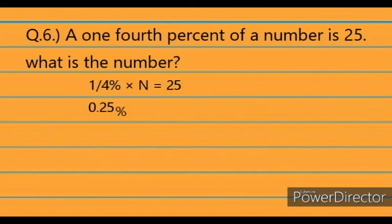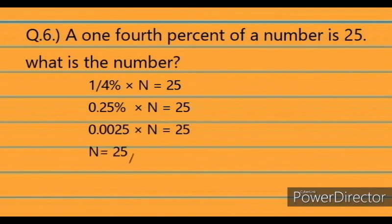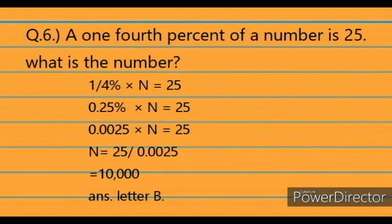Solution: One-fourth percent times N equals 25. That is 0.25% times N equals 25, so 0.0025 times N equals 25. Therefore N equals 25 divided by 0.0025, which equals 10,000. The answer is letter B.